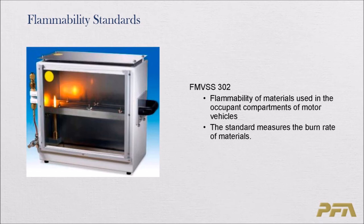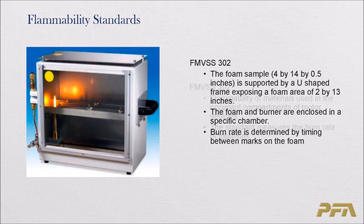Federal Motor Vehicle Safety Standard 302 covers the flammability of materials in the occupant compartments of motor vehicles. The standard measures the burn rate of materials. The foam sample is 4 by 14 by half inch thick, supported in a U-shaped frame exposing a foam area of 2 by 13 inches. The foam and burner are enclosed in a specific chamber and the burn rate is determined by timing between marks on the foam.